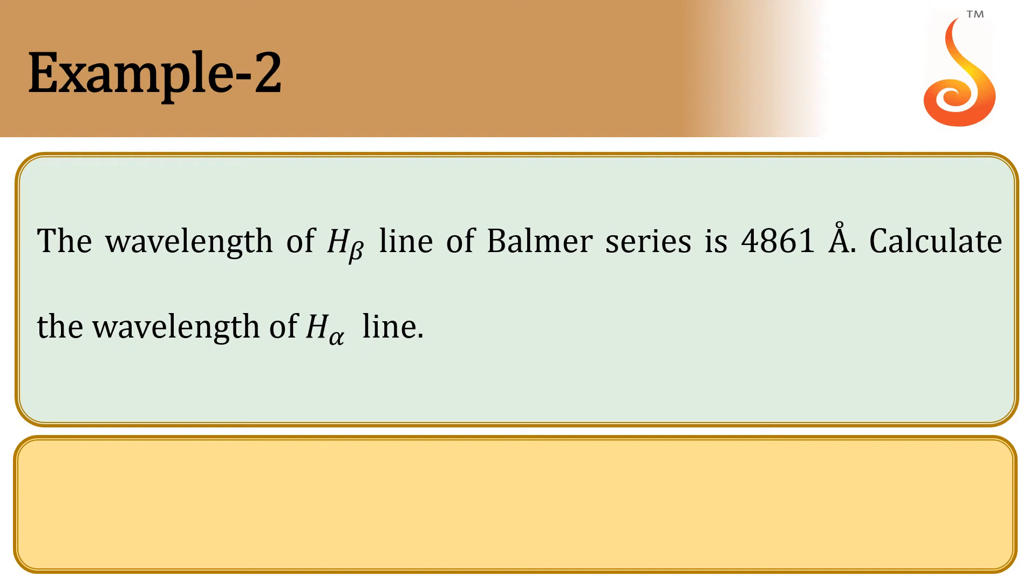Example 2. The wavelength of H beta line of Balmer series is 4861 angstroms. Calculate the wavelength of H alpha line.